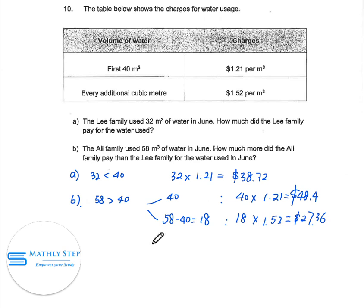For the Ali family, they paid $48.40 plus $27.36, equal to $75.76. How much more did the Ali family pay? They paid this amount minus what the Lee family paid, equal to $37.04.